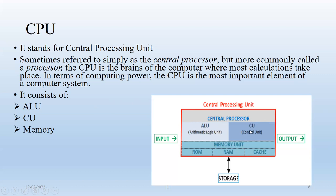Inside the CPU, we have different units. The ALU is responsible for applying operations. The control unit handles the movement of input data from one location to another. In the memory unit, we have ROM, RAM, and cache memory. The final result is stored in memory and through the control unit, that result is given back to the user via output devices.